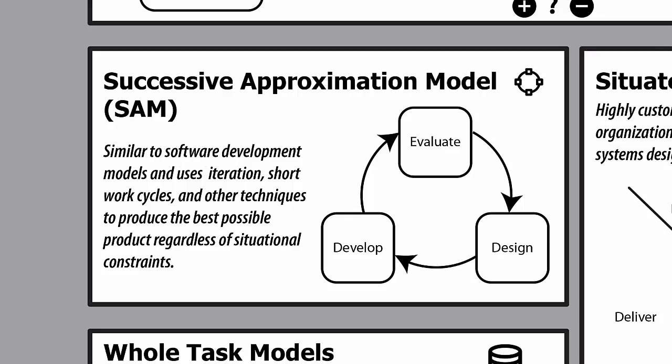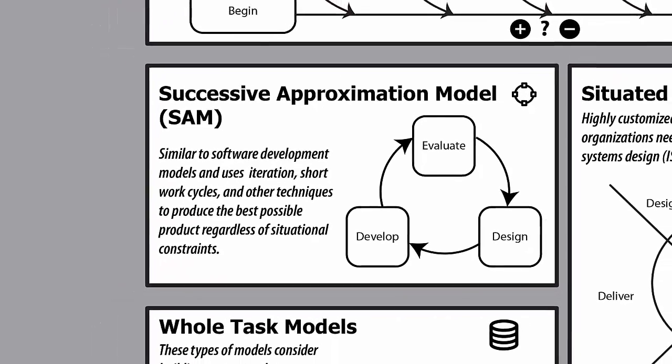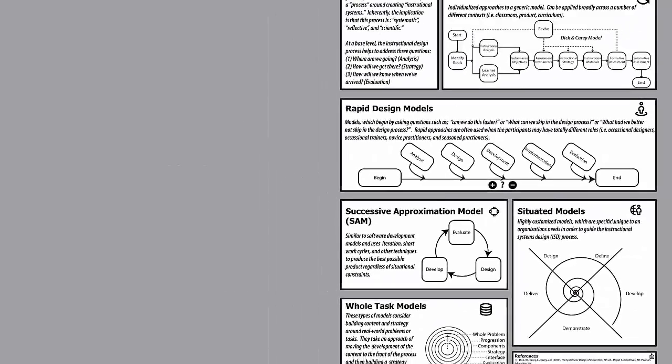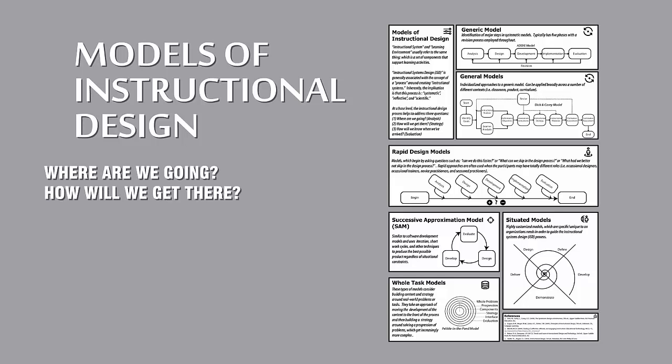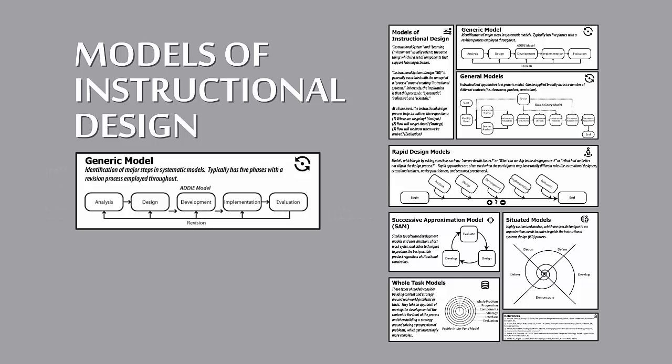Here we see an example of the SAM model. As we can see with all of these different types of instructional design models, there is no one-size-fits-all or one single solution when it comes to using a model for instructional design. It all depends on many different variables including who's involved, what's the culture of the development environment, what are the resources, and what is the right fit. At the end of the day, if you consider the three questions of where are we going, how will we get there, and how will we know when we've arrived, and you choose to use a model, you will be more likely to be successful and complete your efforts in a more timely fashion, using your resources most efficiently. For our course, we will approach our work using the most generic approach — the ADDIE model.